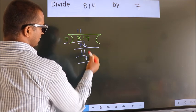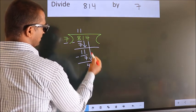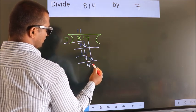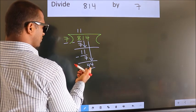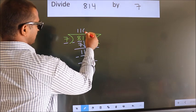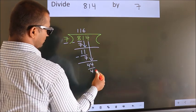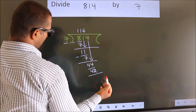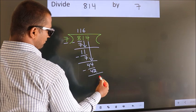After this, bring down the beside number. So 4 down. So 44. A number close to 44 in 7 table is 7 6 42. Now we subtract. We get 2.